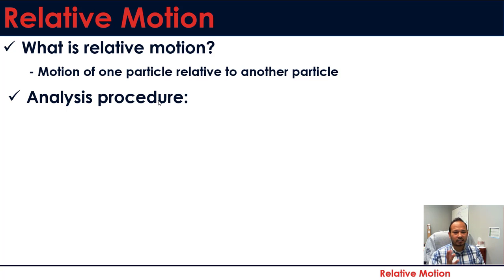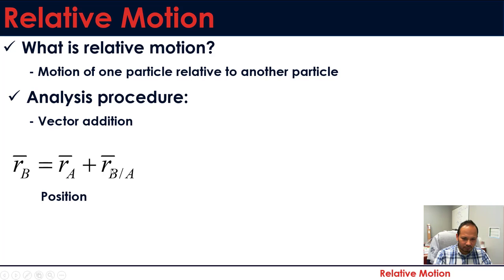How can we perform relative motion analysis? By simply vector addition. If you know the position vector, if we are looking for position of particle B with respect to A, the equation is rB equals rA minus rBA.